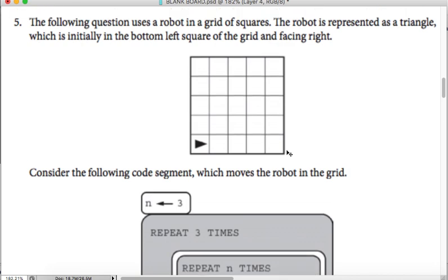Now we are on question number five. Let's read the question. The following question uses a robot in a grid of squares. The robot is represented as a triangle, which is initially in the bottom left square of the grid and facing right. So here is our robot and it faces right.